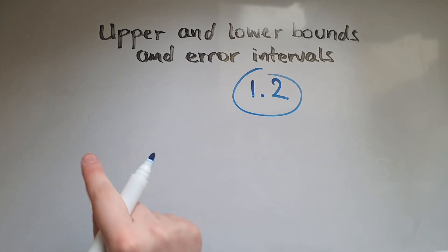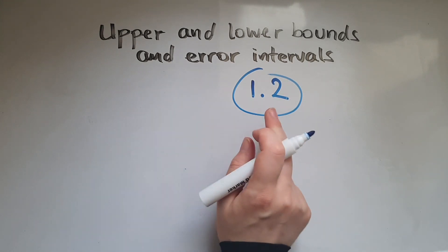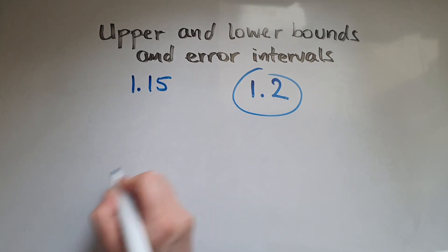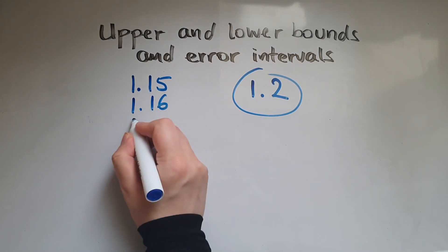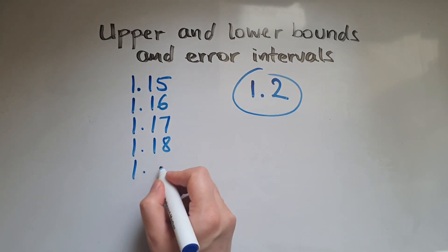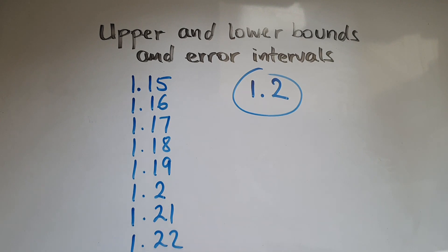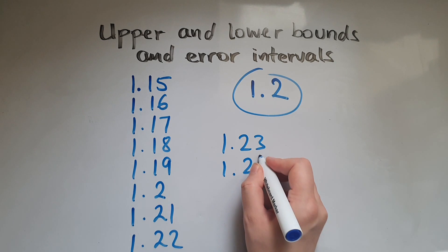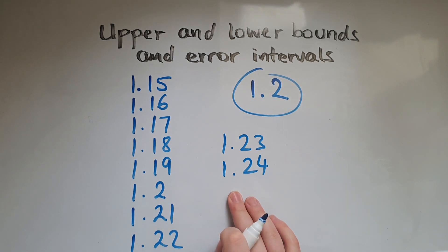Think of numbers with two decimal places. So it could have been 1.15, 1.16, 1.17, 1.18, 1.19, 1.2, 1.21, 1.22, 1.23, 1.24. You can't go to 1.25 because that would round to 1.3.